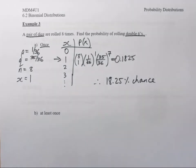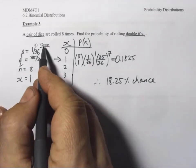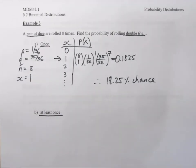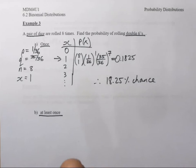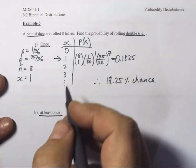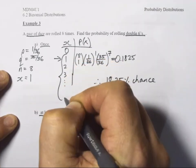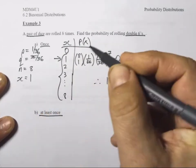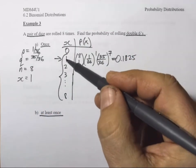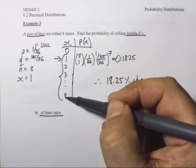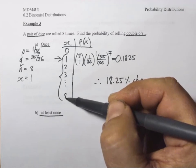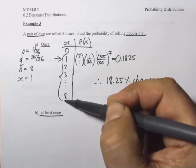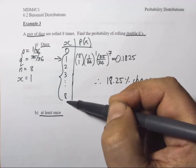Let's go on to part B. Part B says not once, but at least once. How does that change the question? At least once means it could have happened once, twice, three times, four, five, six, seven, or eight times. So at least once means we're taking all of these cases, all the way up to eight, and calculating each separate case and adding them up. Well, that would be a lot of cases — isn't there an easier way?